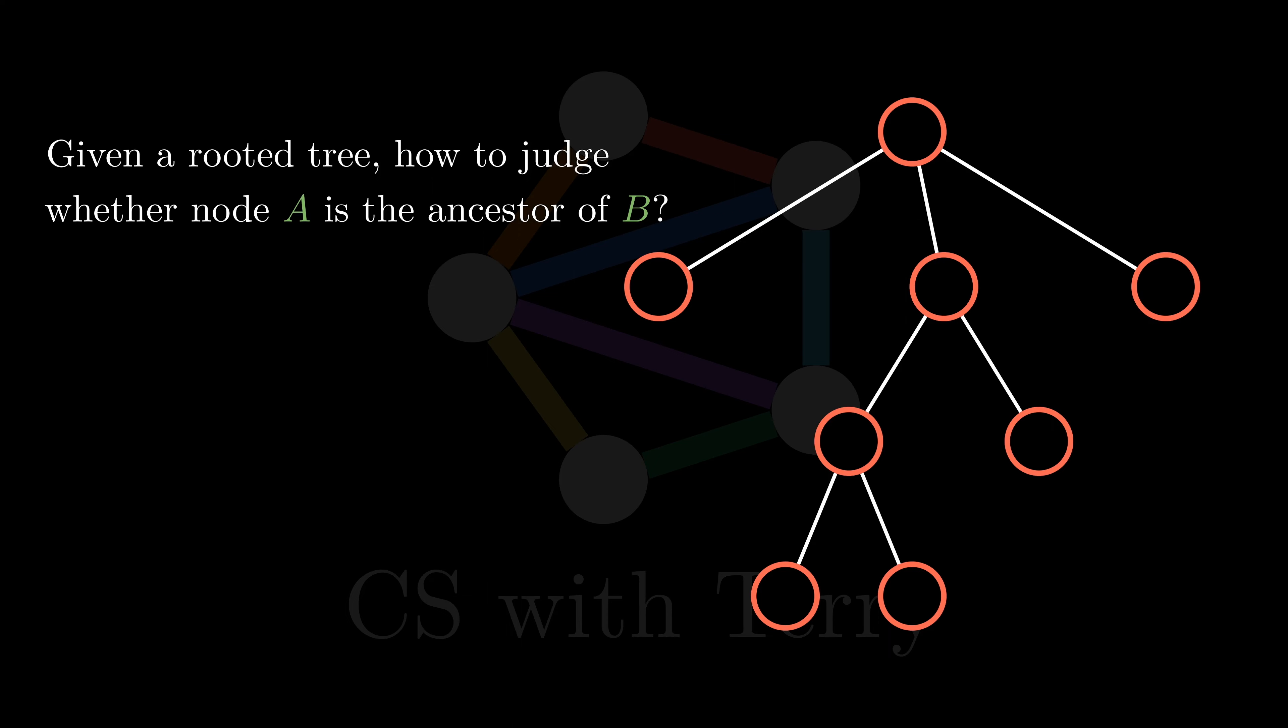In this tree, if A is here and B is here, A is an ancestor of B. But if A is here, A is not an ancestor of B. So, how do we solve this problem?